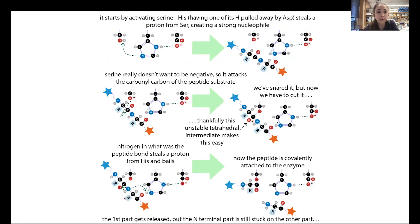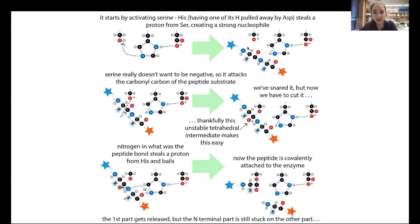Let's look at how serine proteases work with the triad. Aspartate is going to pull away one of histidine's hydrogens, and that's going to make histidine want to attack the serine's OH to get a hydrogen. So histidine takes it from the serine, giving you a nucleophilic intermediate on the oxygen. At this point, your peptide is still fine but the serine is not happy.